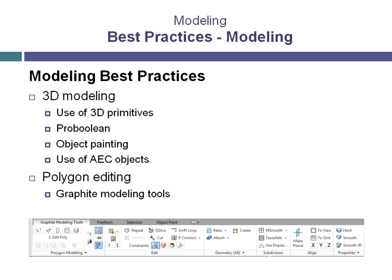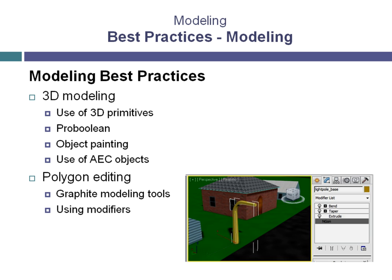One of the most useful features in 3ds Max can also be considered one of the best practices: the use of modifiers when creating three-dimensional models. By working with modifiers, you add a level of flexibility and control that you can only get through the use of modifiers in the modifier stack. Whether you start from a 2-dimensional shape or a 3-dimensional primitive doesn't really matter — using modifiers can save time and makes for a very efficient workflow.